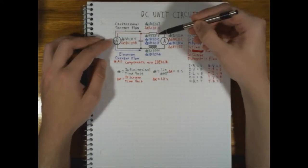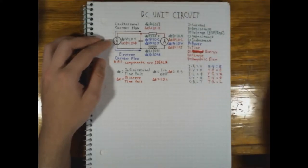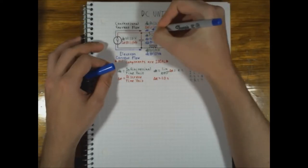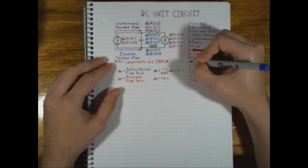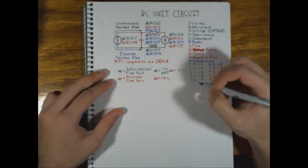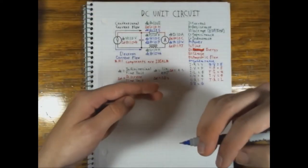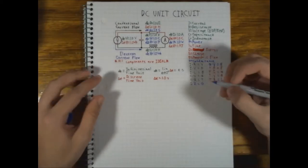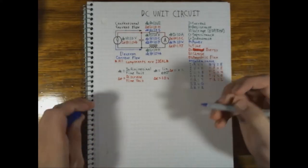Looking at our resistor, dt R equals 1.0 ohms, so our resistor has a resistance of one ohm. As a result, this also equates to a conductance of one siemen, because siemens — the unit of conductance G — is effectively equal to 1/R. Conductance is the reciprocal of resistance: the higher the resistance, the less conductance, and vice versa. This reciprocal relationship means 1/R = G, and inverted, 1/G = R.